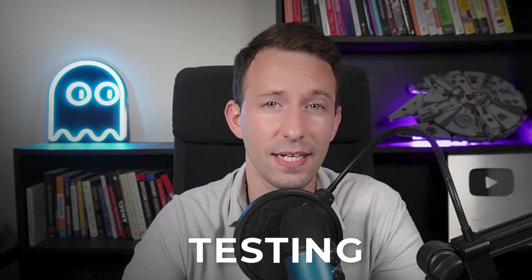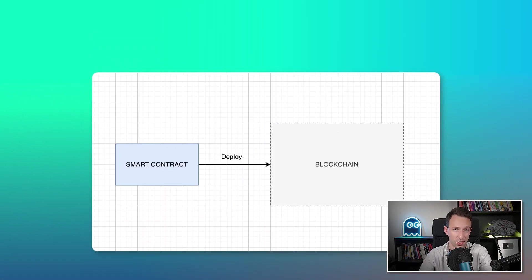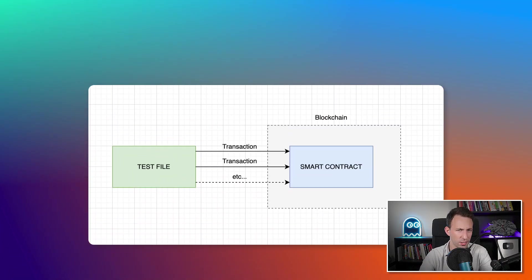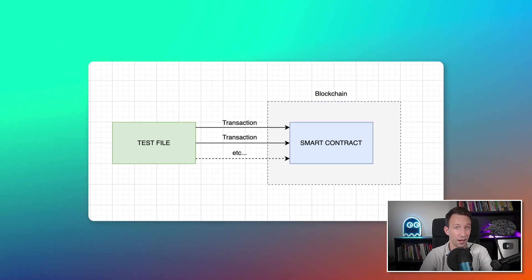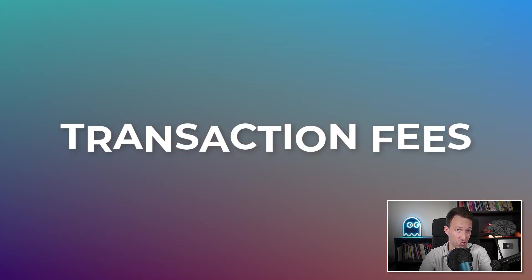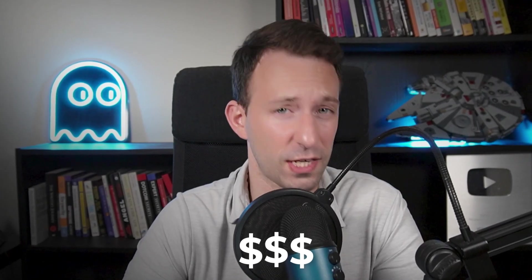How can we be sure our code is good? By testing our smart contract. But there is still a problem: to run this test, we need to deploy the smart contract to a blockchain. We could do it on the real Ethereum blockchain — the mainnet — but when we run tests, it sends a lot of transactions, and we have to pay transaction fees for each one. So if we do this on mainnet, it's going to be super expensive.